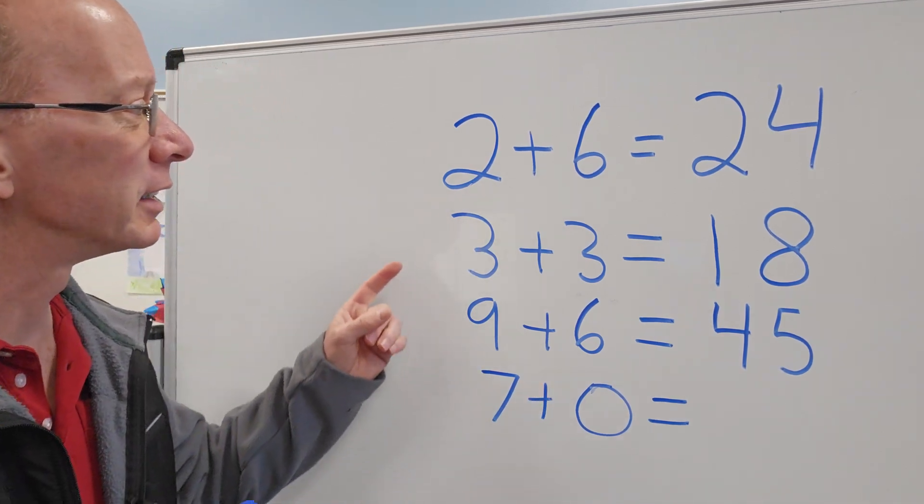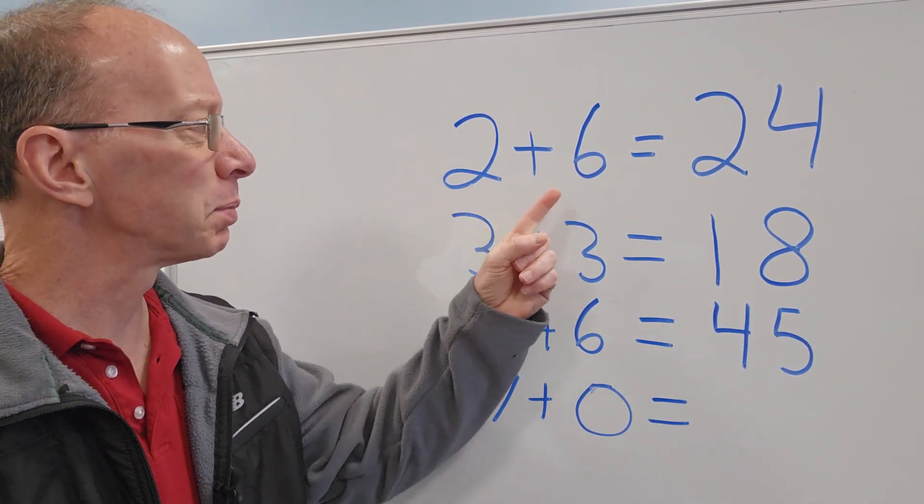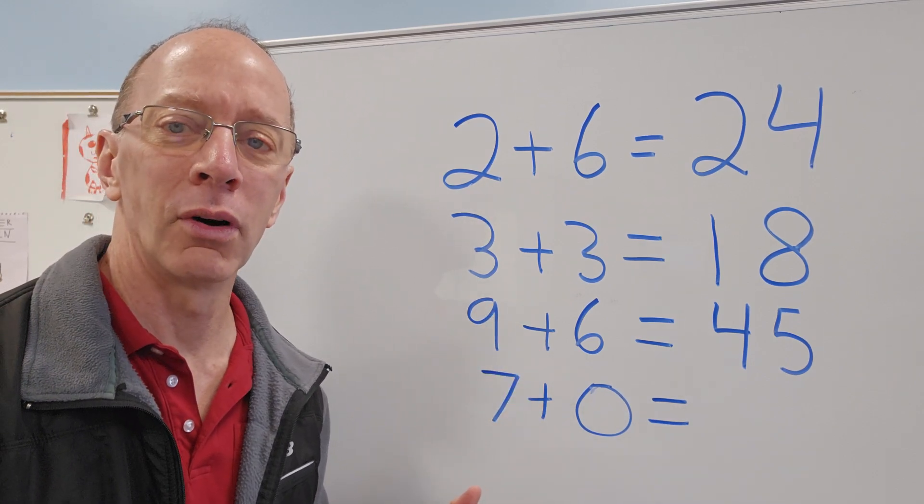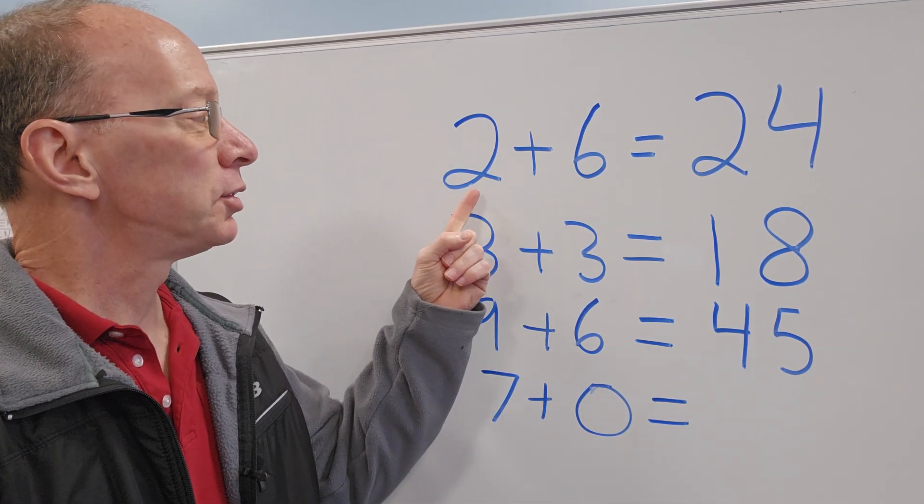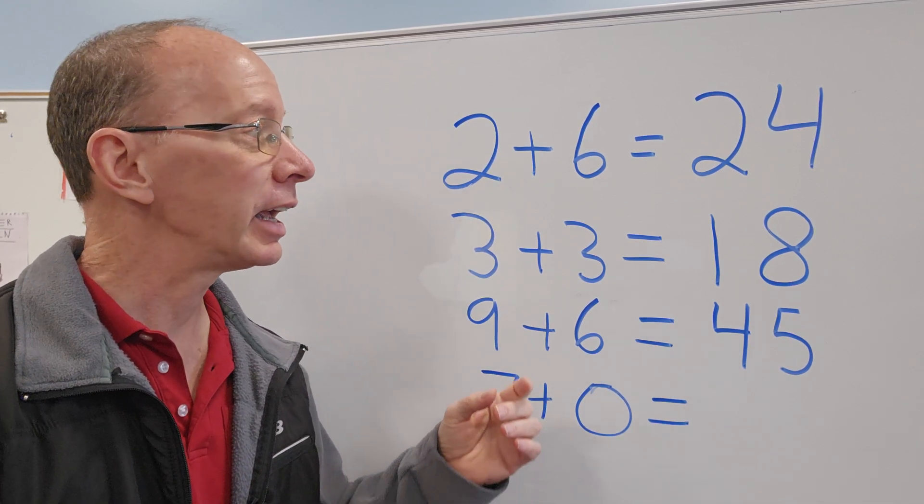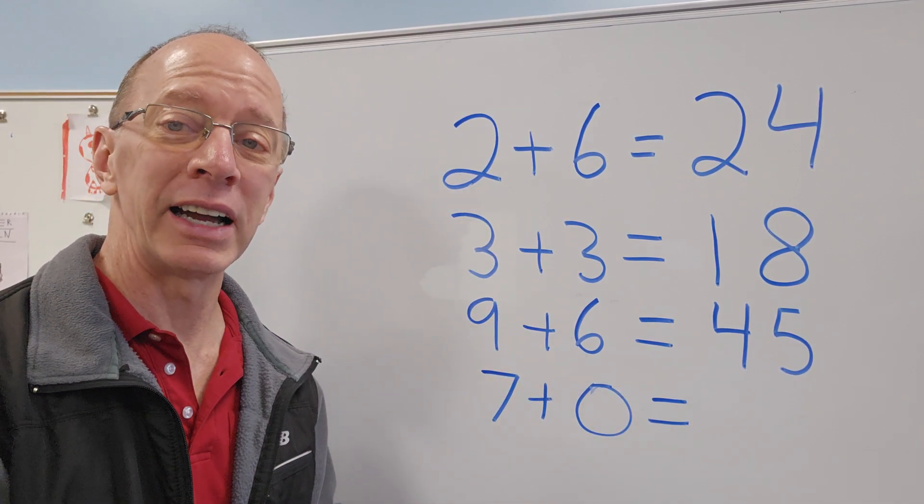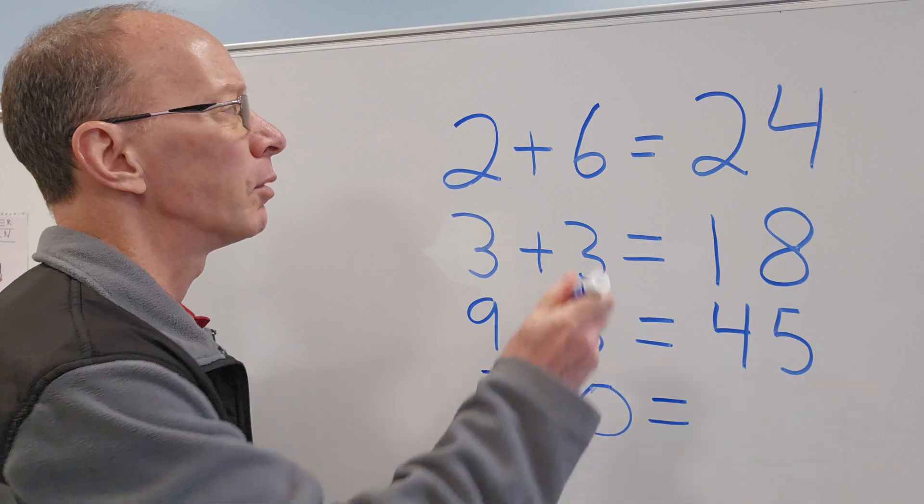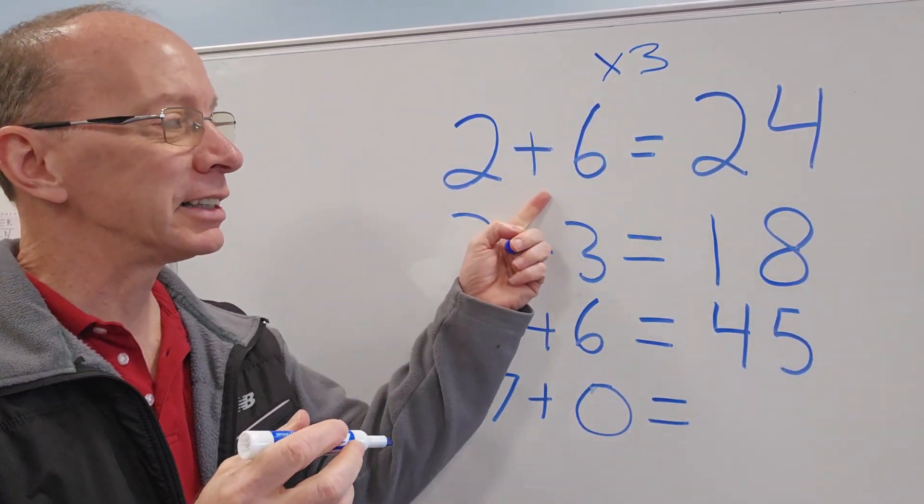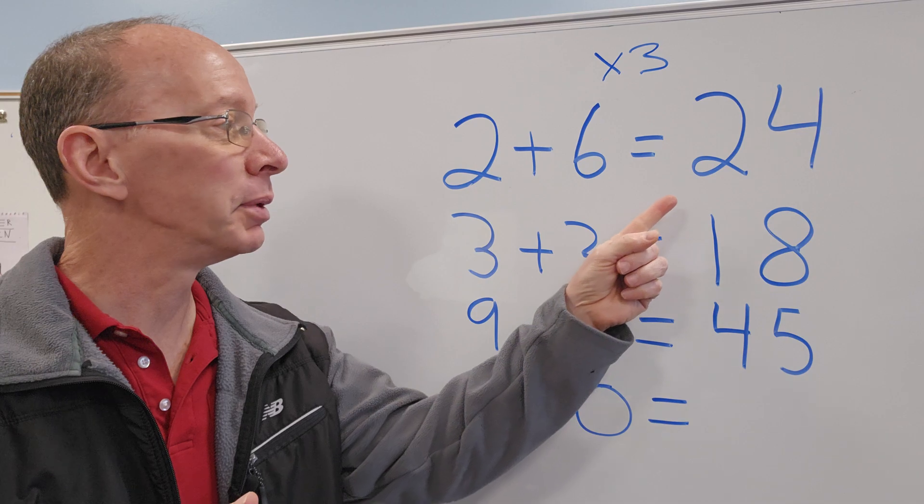All right, let's go ahead and begin. Take a look at this here. We got 2 plus 6 equals 24. Well, how did I get 24? I took 2 plus 6, which is 8, and then I multiply it by 3. So I multiply it by 3 times 3. So 8 times 3 would be 24.